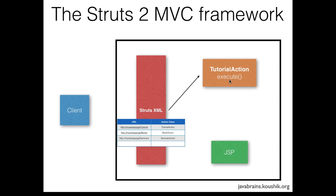An execute method could do a lot of things. Here I have a tutorial action whose intended goal is to pull up a list of tutorials available on the internet. Let's say you have a business service method that gives the list, or the execute method itself does all the hard work and ends up with a list of tutorials. It then has to pass control to a JSP that renders those tutorials in HTML format and passes them to the client.